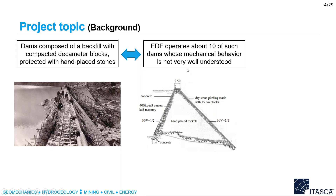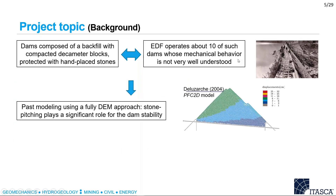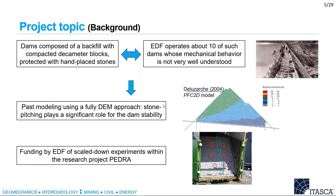EDF operates about 10 such dams, and the problem is that the mechanical behaviour of this dam type is not very well understood. For past modeling, a study in 2004 modeled a full DEM model of one of those dams using PFC2D Itasca software, concluding that the stone pitching on both sides plays a significant role in dam stability. Then in 2014, EDF funded a scaled-down experiment within the research project PEDRA, where several downscaled dams were tested experimentally — I will talk about that later.